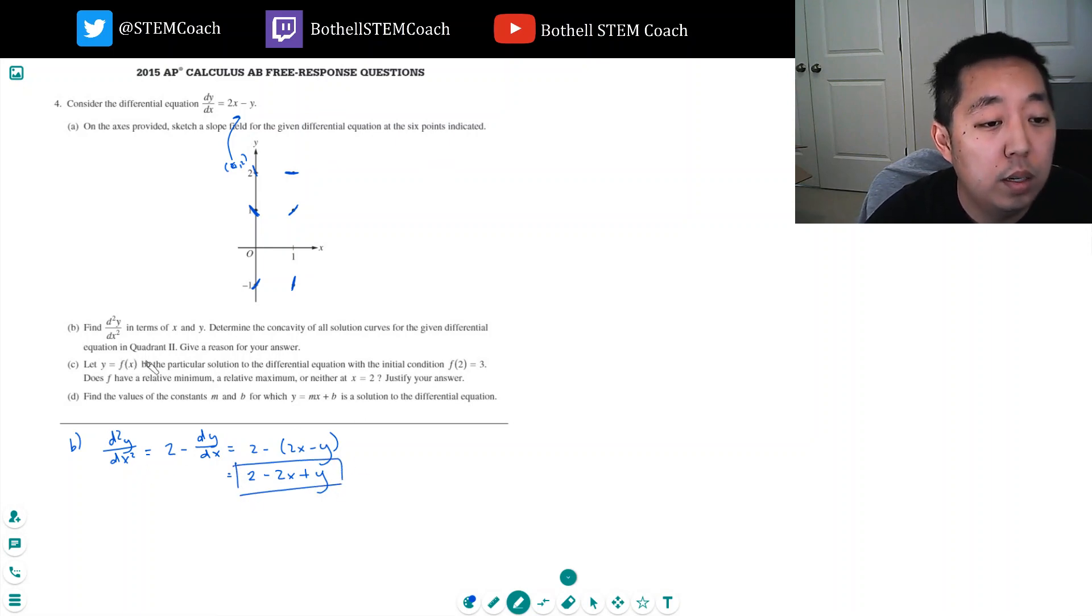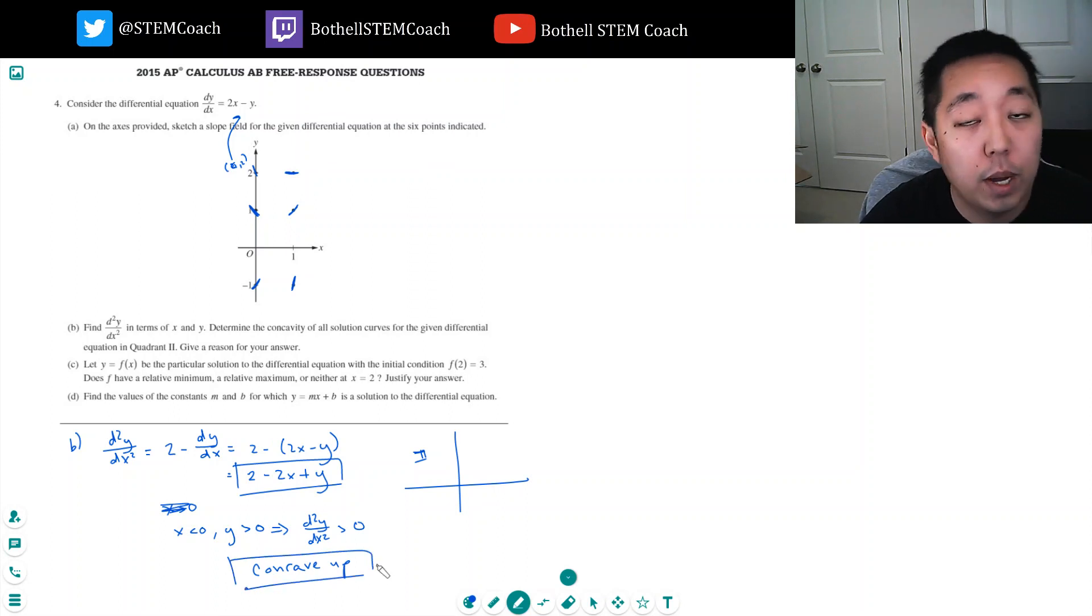Okay, so that's my equation for the second derivative. Now, the concavity is what happens in the second quadrant. Quadrant 2 is where x is less than 0 and y is greater than 0. This is quadrant 2 over here. So, x is negative and y is positive. If x is less than 0, this is positive. Y is greater than 0, that's positive. This whole thing, this implies the second derivative d²y/dx² is always positive, hence it's concave up. Concavity is if the second derivative is positive, it's concave up. Second derivative is negative, it's concave down.